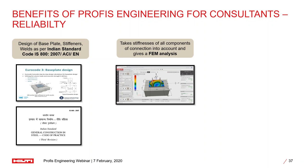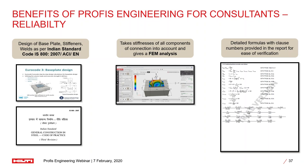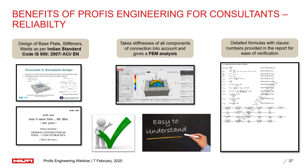An exciting feature: the design report now includes detailed formulas and clause numbers. If a proof consultant wants to check how any value was derived, the formulas are right there with the relevant code clause references. This ensures calculations are reliable and easy to understand for everybody, reducing back-and-forth during peer review.